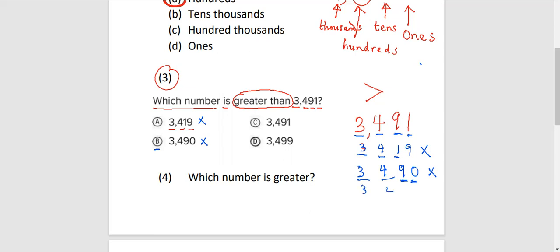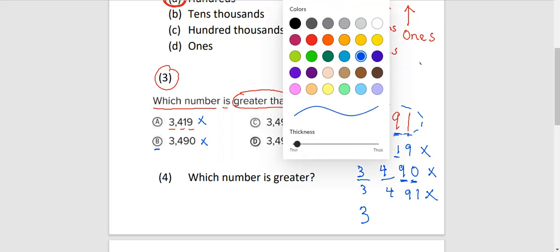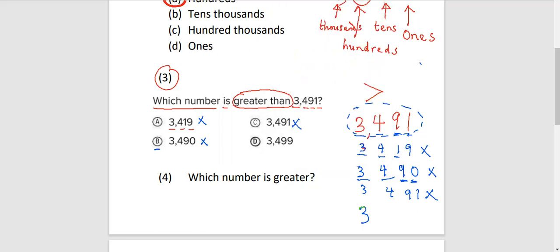Let's see option C. We have 3,491. This number is the same as the number we are talking about. It's the same number. So it's not greater. It's equal. This is also wrong. This is how you try to see which answer is correct. Let's look at option D. We have 3,499.